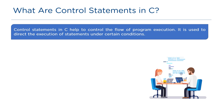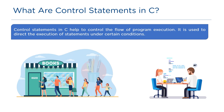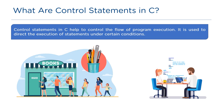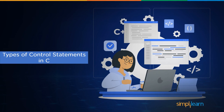Let us consider an example of a stationary shop. When a girl wants to buy a ball pen, she tells the shopkeeper she has the condition to purchase a pen of either of two colors: black or blue. The shopkeeper first searches for the black color pen. If it's not available, he searches for the blue color pen. If the condition is satisfied, the girl will buy the pen, else she will not. Similarly, the computer executes statements when the given condition is satisfied.